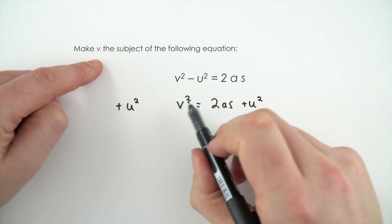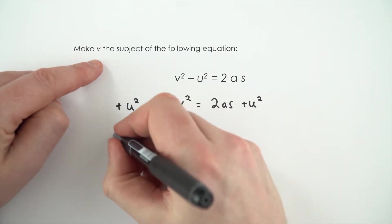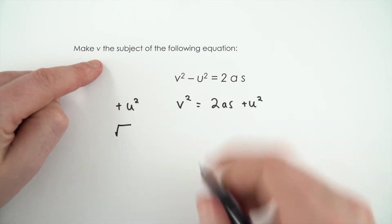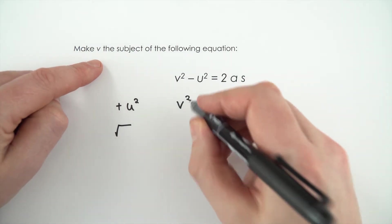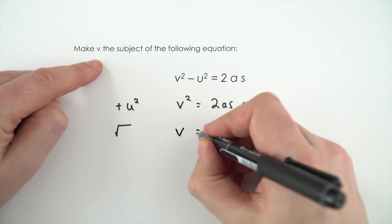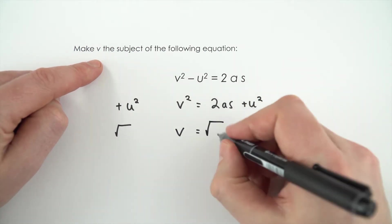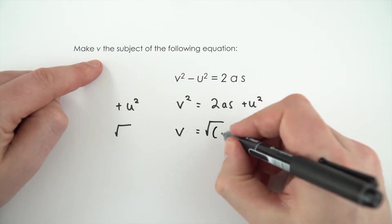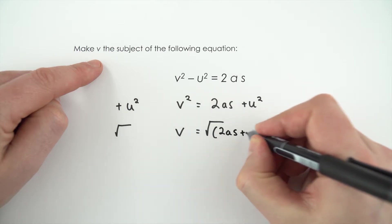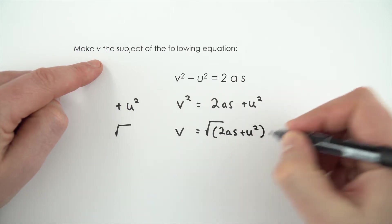But we've now got a v squared term and we just want the v on its own. So I'm going to do this by square rooting both sides. The square root of v squared is just equal to v, and this is then equal to the square root of everything on this side. I'm going to put it in brackets just to make it clear — that's the square root of 2as plus u squared.